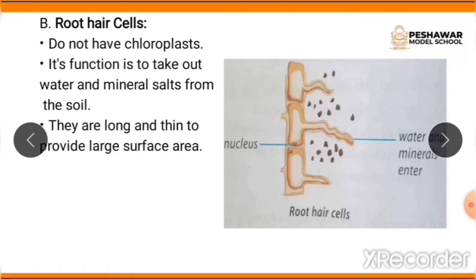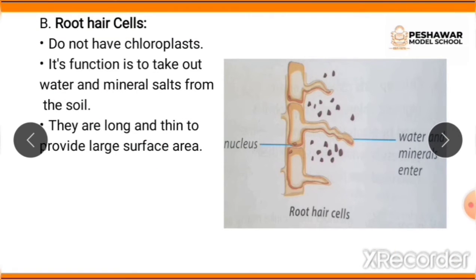Root hair cells do not have chloroplast because the root's function is to extract minerals and water, not to make food. Their function is to take out water and mineral salts from the soil. They are long and thin to provide a large surface area, as you can see in the structure of the root.